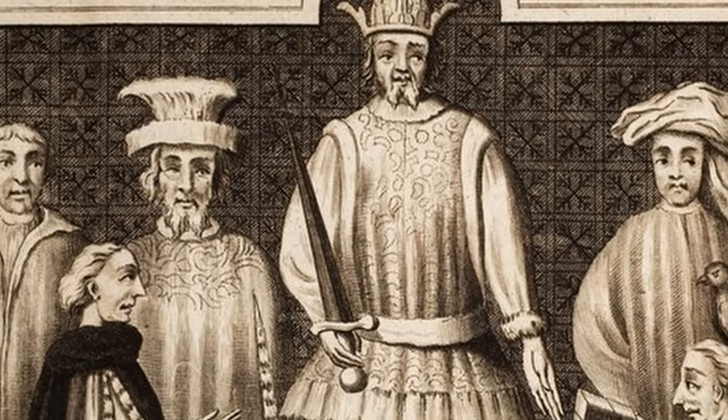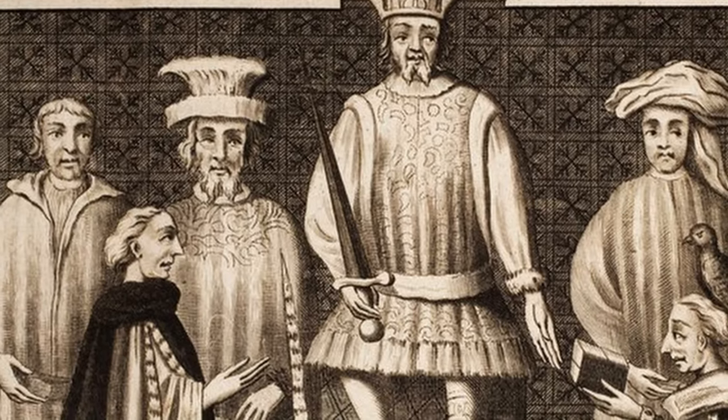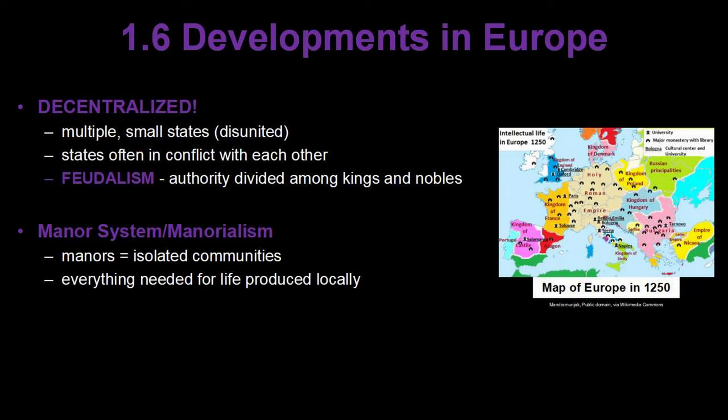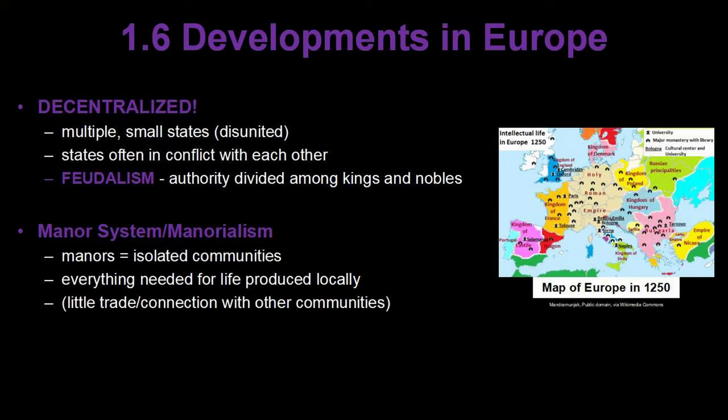We've also got the manor system, sometimes also referred to as manorialism. This refers to isolated pieces of land called manors, in which most of the economic activity was contained inside. Everything you need for society to function is produced within that manor — the food is all grown there, the manufactured goods are all made by local artisans, and there's very little trade with the outside world. Of course, there are some important trading cities in Europe, but the scale of trade is much smaller than what you see in China, South Asia, Southeast Asia, or the Middle East.